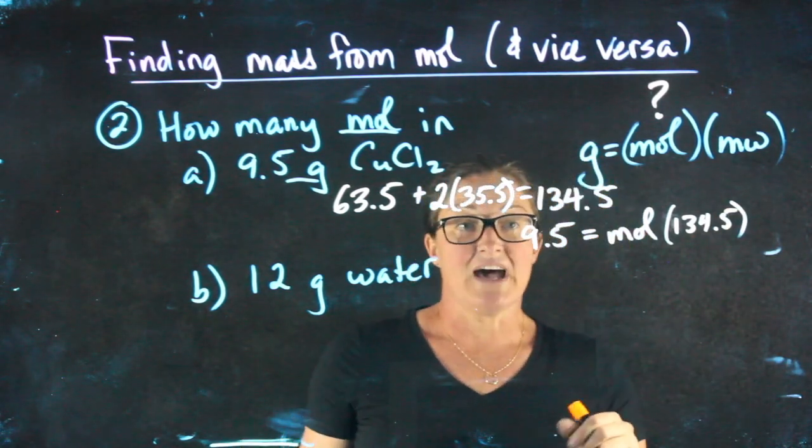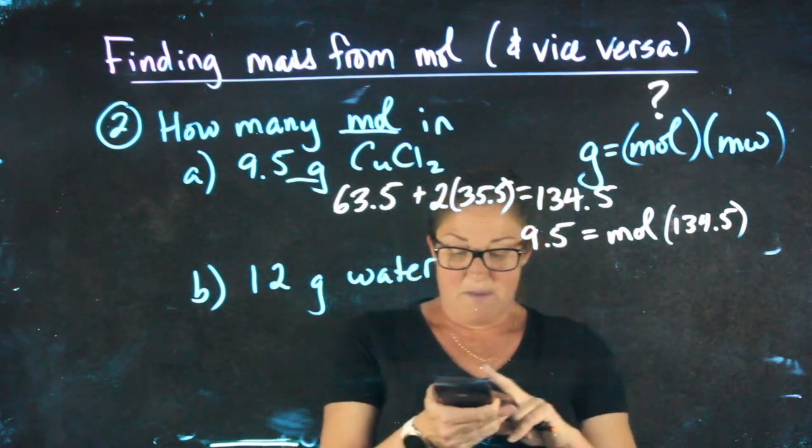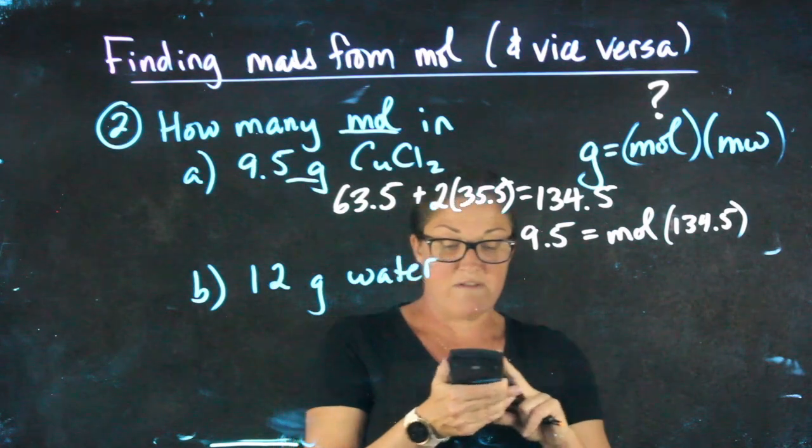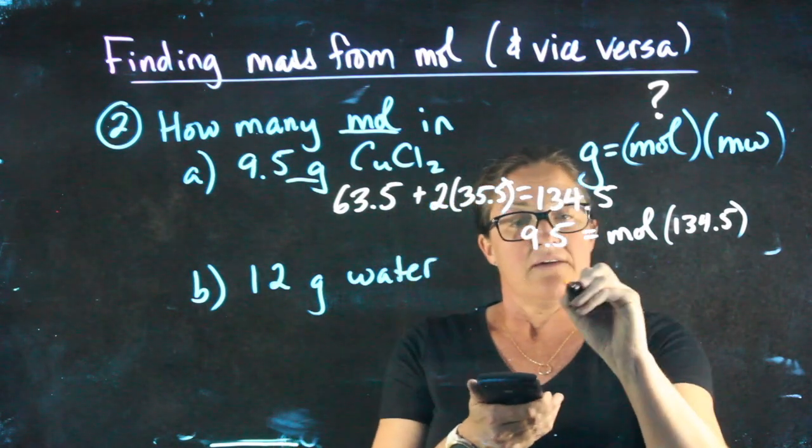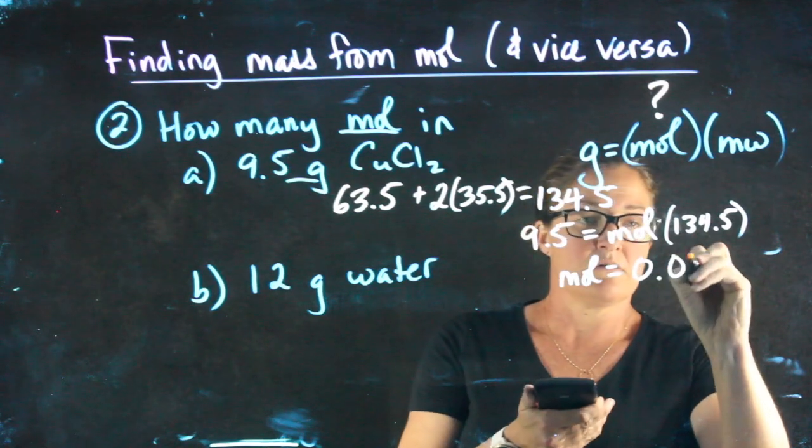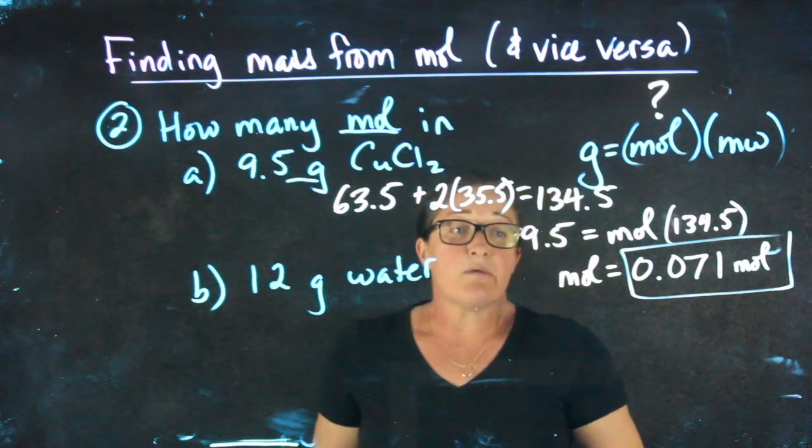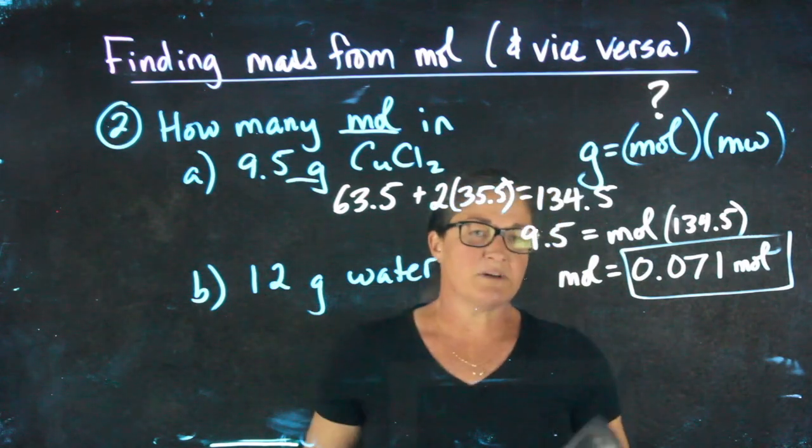If I want to get moles alone, I need to divide both sides by 134.5. 9.5 divided by 134.5 gives me 0.071 moles. Typically with moles, we ask you to go to three decimal places.